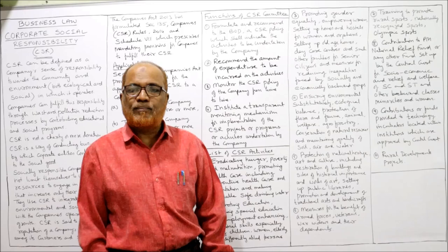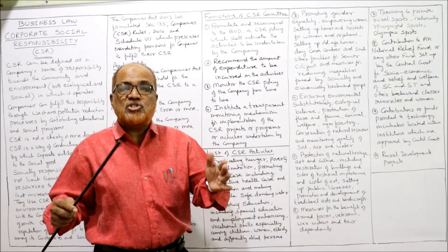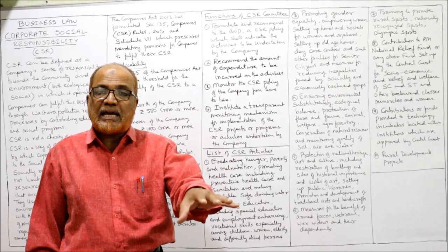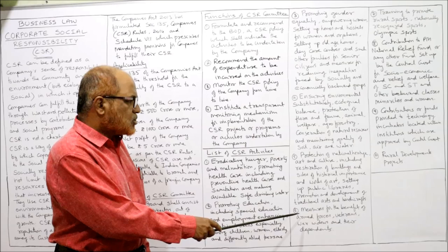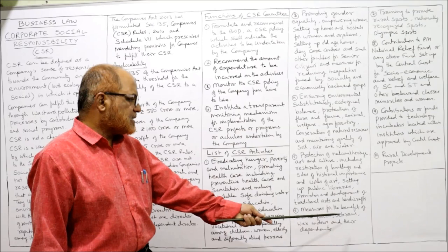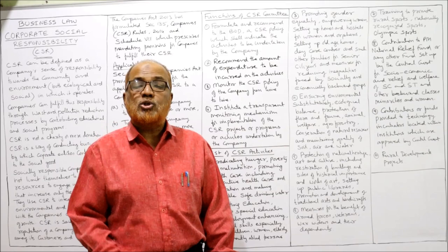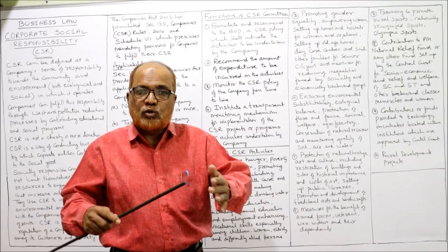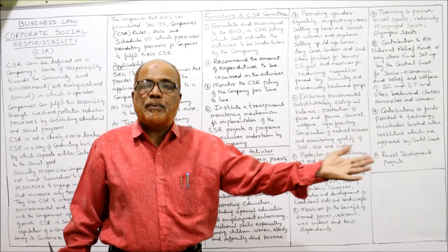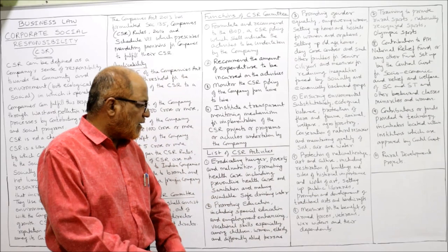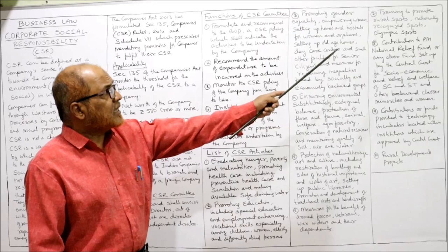The fifth activity is protection of national heritage — monuments, buildings, and national heritage structures. It is the responsibility of companies to protect such structures. The sixth activity is measures for the benefit of armed forces, particularly veterans, war widows, and their dependents. Measures must be taken to help the armed forces as they sacrifice their lives to protect the country, and it is our responsibility to protect war widows.